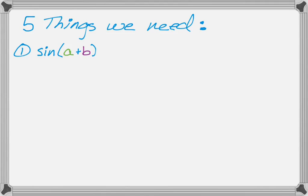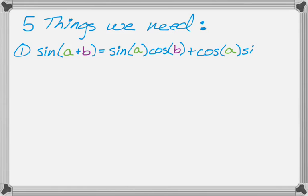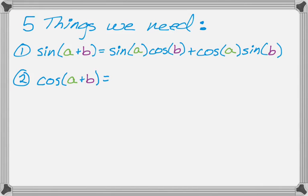We need to know sine of a plus b, and we know that that's sine a cosine b, plus cosine a sine b. We are also going to need to know cosine of a plus b at some point. So that's going to be cosine a cosine b, and then minus sine a sine b.